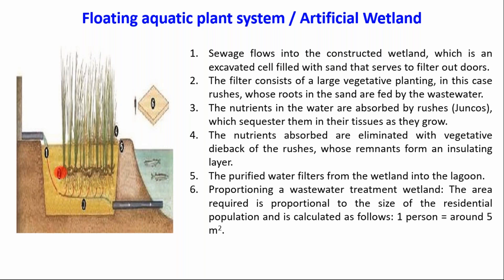The filter consists of large vegetative planting — in this case, rushes — whose roots in the sand are fed by the wastewater. You can observe these roots which are connected and inserted into the wetlands or sand. Third, the nutrients in the water are absorbed by the rushes, which sequester them in their tissues as they grow.